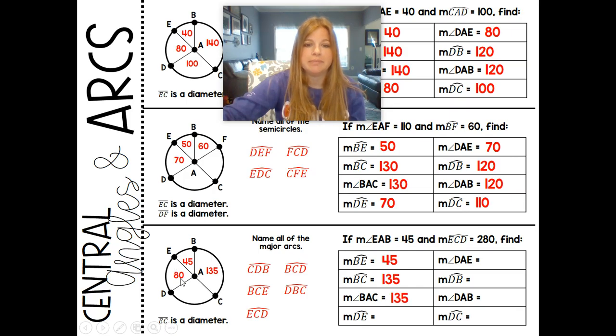Arc DE, if I'm showing you this is 80, would then be 80. Angle DAE is also 80. Arc DB, we would add 80 and 45 to get 125. That central angle of DAB, same thing, 125. And arc DC, if this is 80, then my remaining angle here would have to be 100. And so DC is 100.